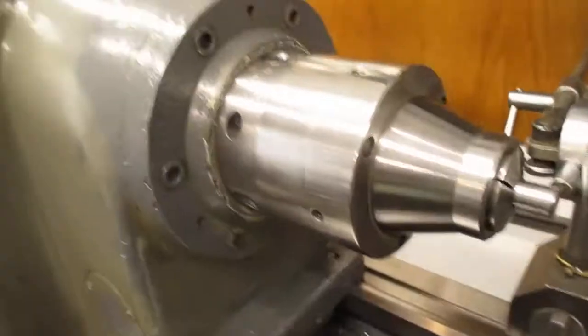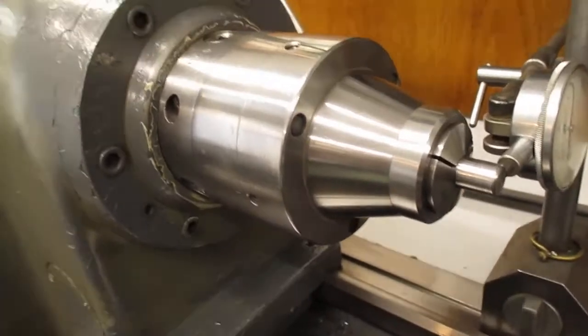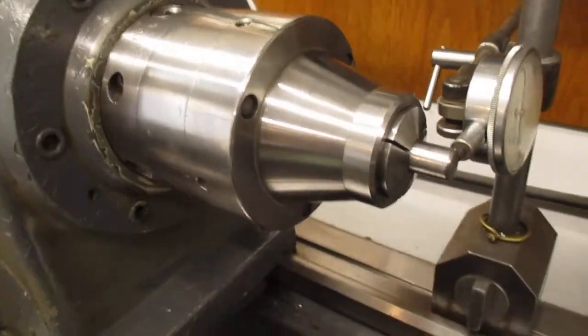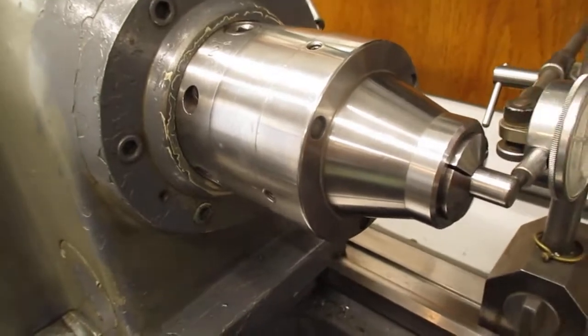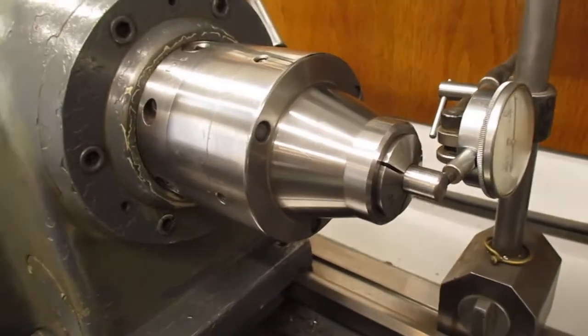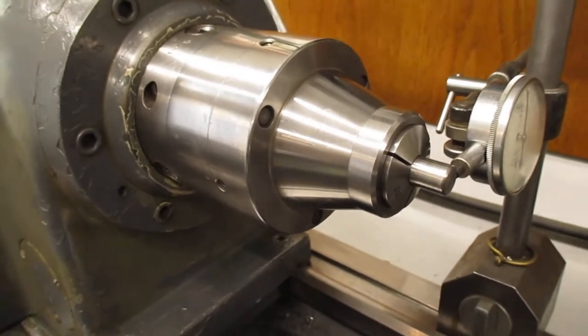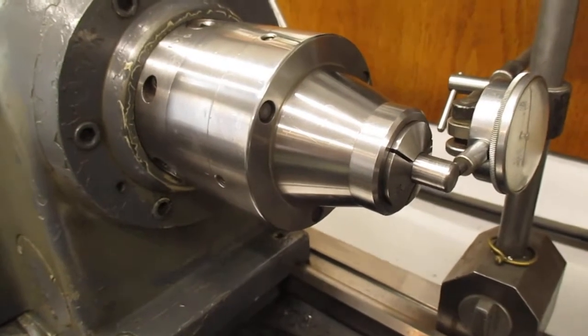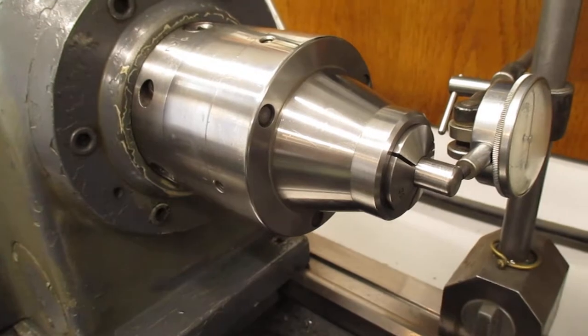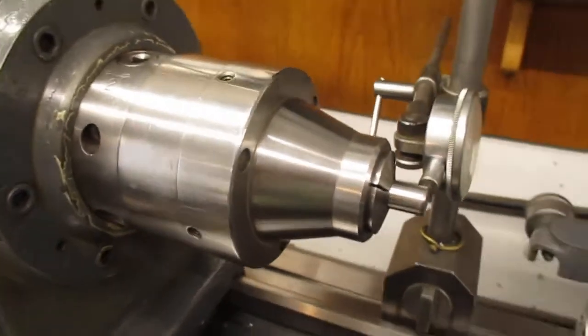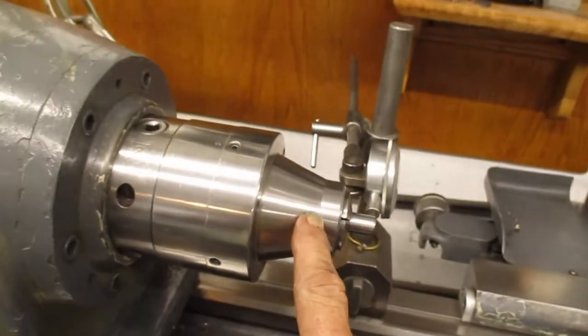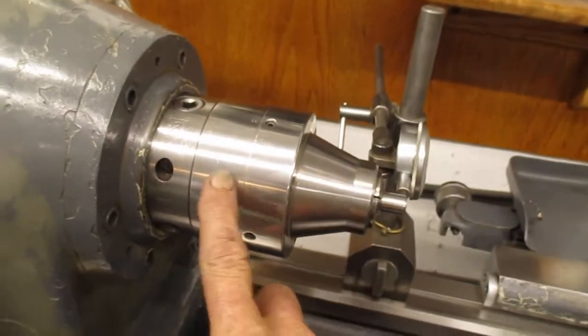But what I did here in the nose, I blended it in. And at the very nose here, it's a 5C CNC collet holder. Now they're about 150 bucks. And what I did was I pressed that into the front piece of this. This is two pieces. It adjusts like a chuck.